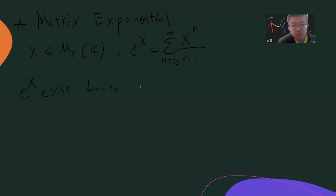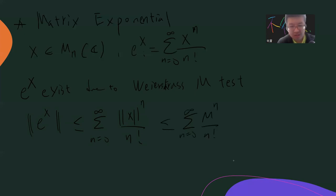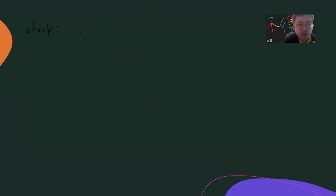The exponential exp(X) exists due to the Weierstrass M-test. The reason is that if you take the matrix norm — the Euclidean norm summing over all elements squared and taking the square root — this series always converges because the norm of X is always bounded. So exp(X) is well-defined. Also, exp(X) is a continuous function, because for each element it is a composition of continuous functions.